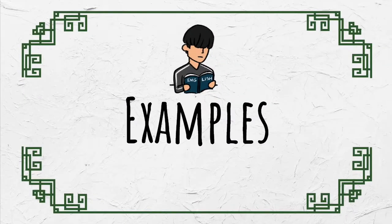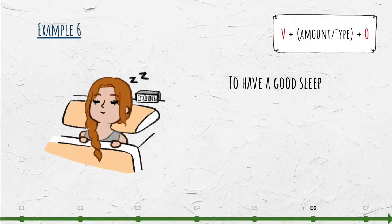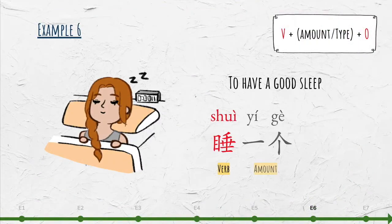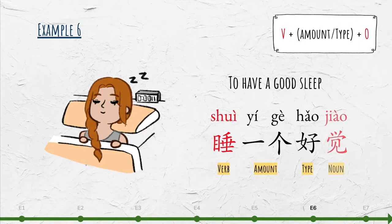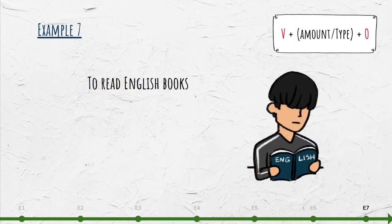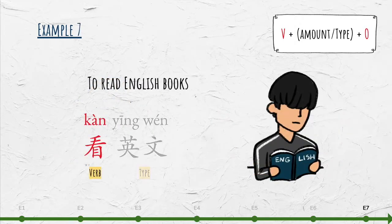Here are some more examples. 'To have a good sleep': 睡一个好觉. 'To read English books': 看英文书.